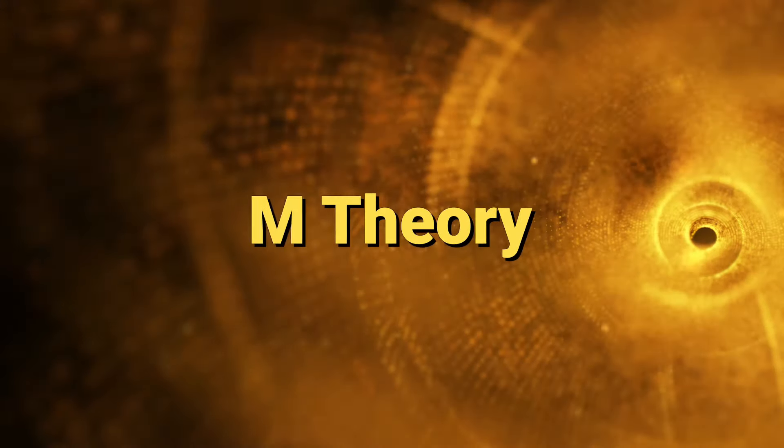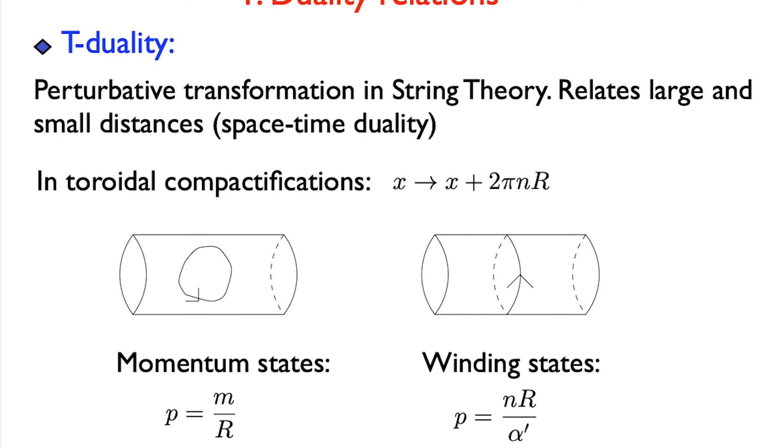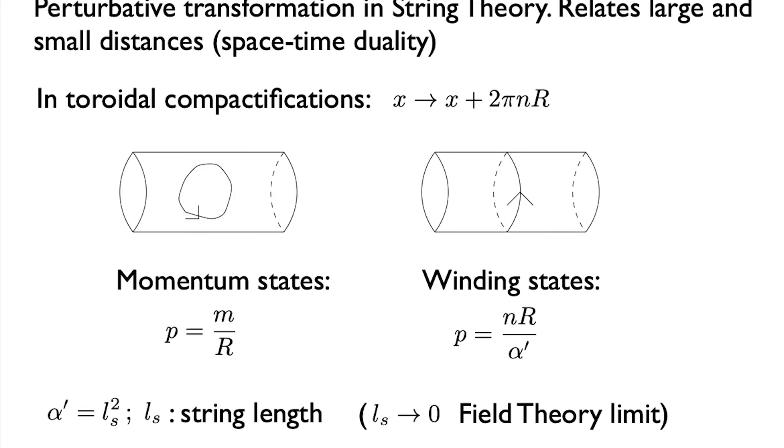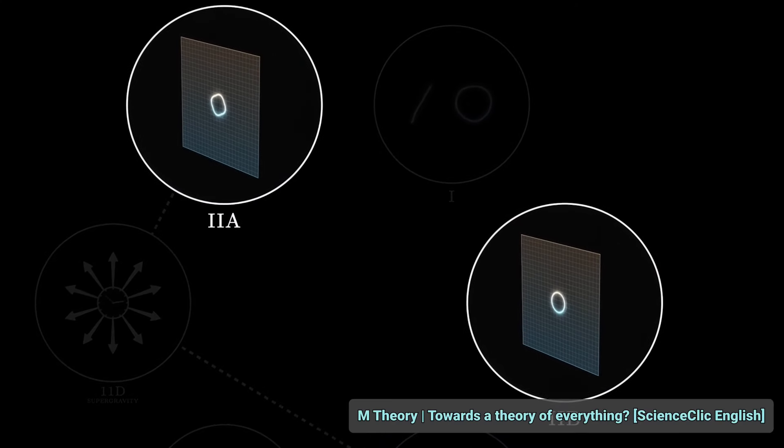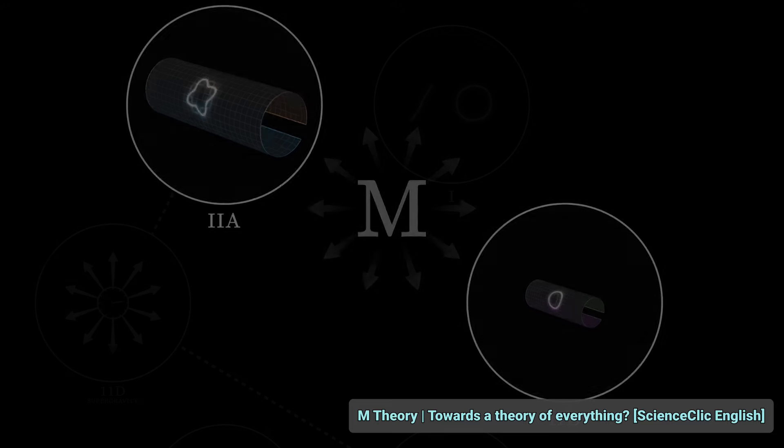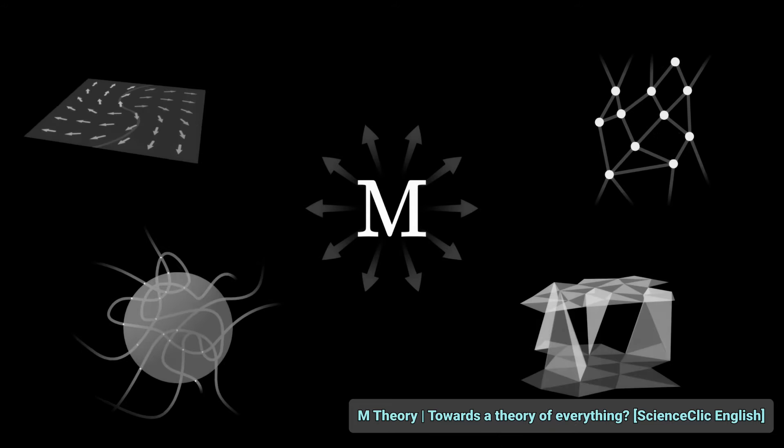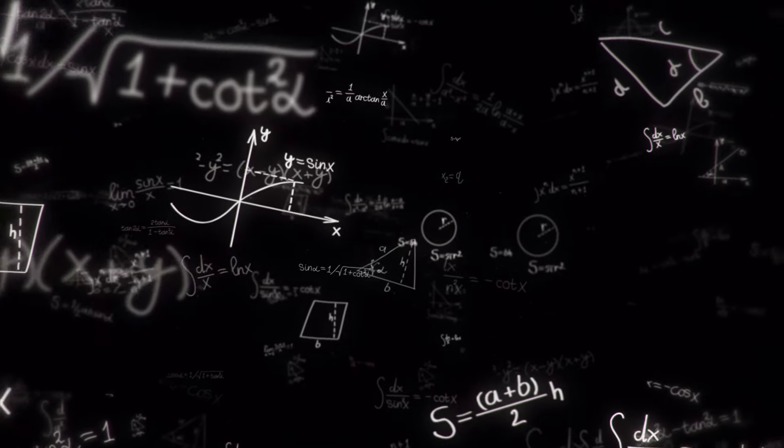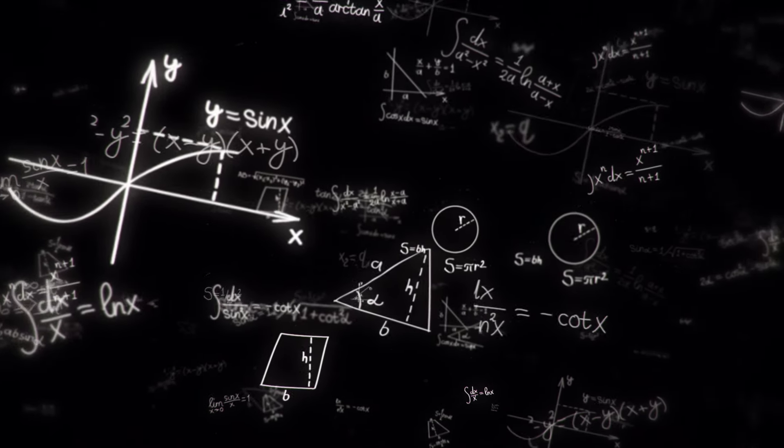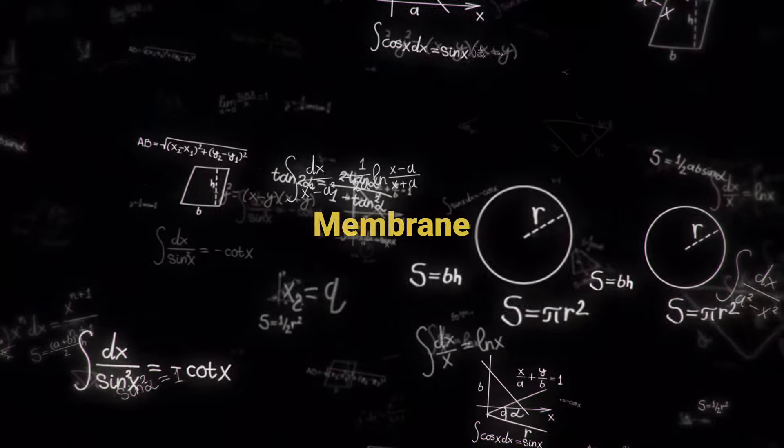M-theory. The five flavors of string theory are related through something called dualities, such as T-duality connecting type 2A with type 2B, and S-duality linking type 1 with heterotic SO32. The fact of these dualities is what spurred the idea of M-theory, which is an 11-dimensional unifying framework encompassing all five string theories, rather than a 10-dimensional theory. It does so by introducing a new type of brane called a membrane, which we'll talk more about later.